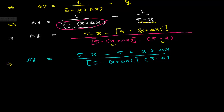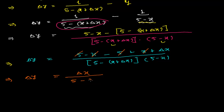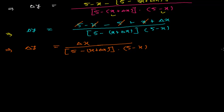Removing the bracket: delta y equals 5 minus x minus 5, and minus times minus gives plus x plus delta x, all divided by (5 minus x plus delta x) times (5 minus x). The plus 5 and minus 5 cancel, and minus x and plus x cancel, leaving delta y equals delta x divided by (5 minus x plus delta x)(5 minus x).